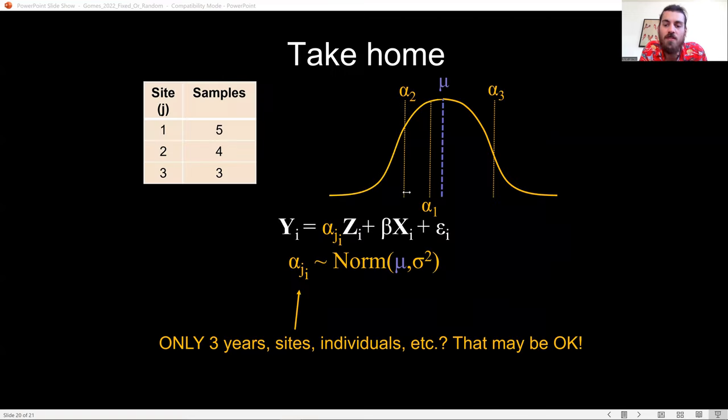And the take home here is that there's no harm in using random effects when you have fewer than five levels, if you are not interested in making inferences about those random effects, but instead are interested in the other fixed effect coefficients in your model.